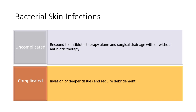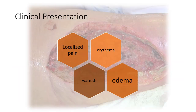The clinical presentation of a skin infection is the classic localized pain, redness (erythema), and warmth — hot to the touch because of vasodilation and the infectious inflammatory process. There is also edema from localized vasodilation allowing the immune system to enter the area.